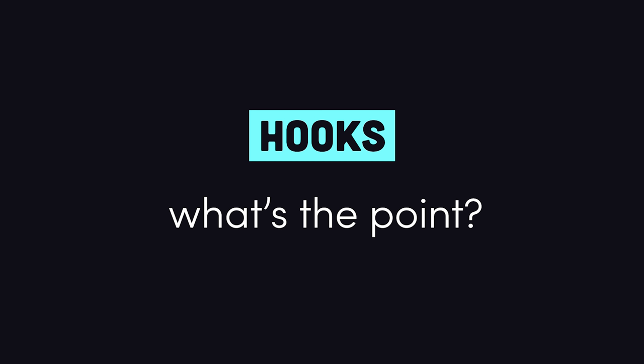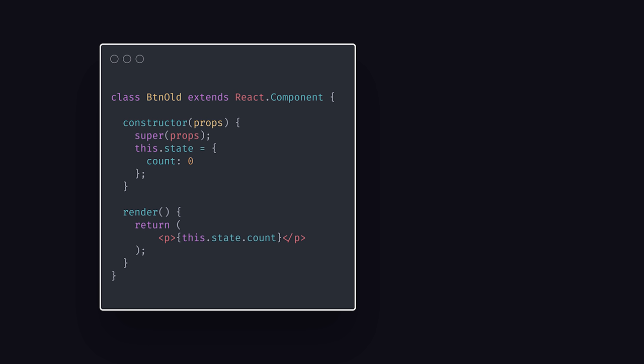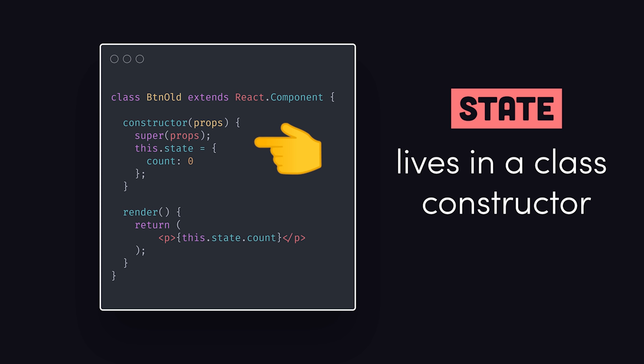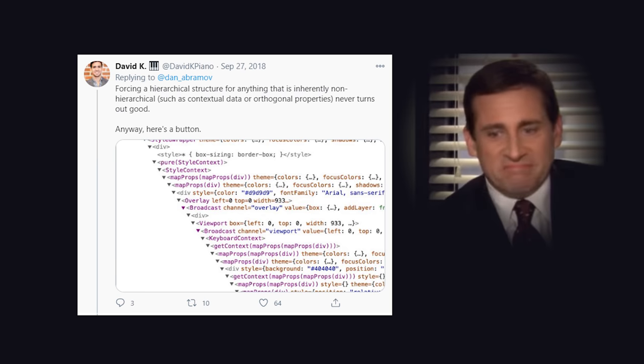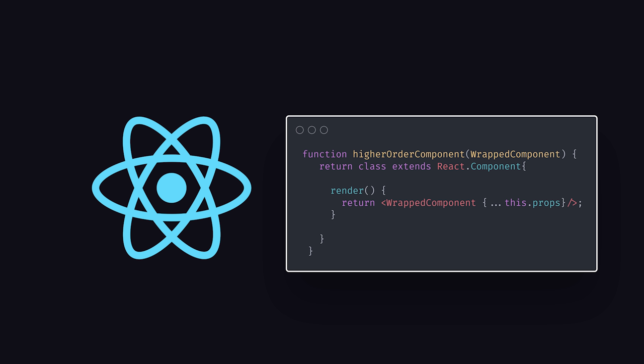If you're new to React, it's helpful to understand why hooks exist in the first place. In the past, stateful logic — data that changes within the application — was tightly coupled to a class-based component. That means in order to work with reactive data, you needed to create a component. What that led to in reality was a complex tree of nested components, and sharing any logic required frustrating patterns like higher-order components and render props, which have you passing components as arguments to other components.